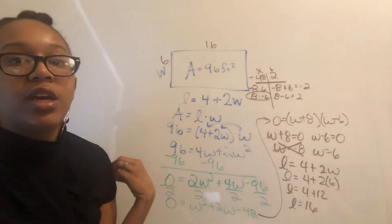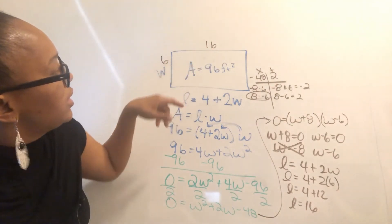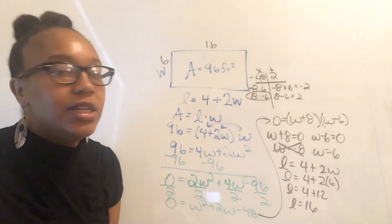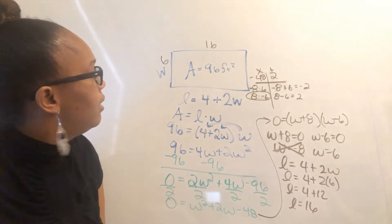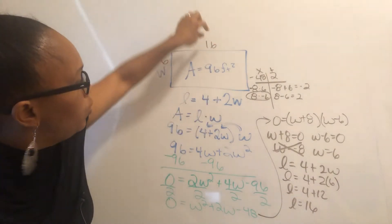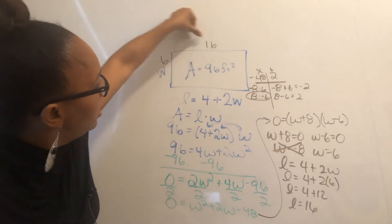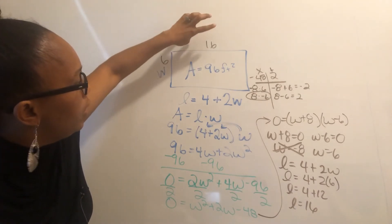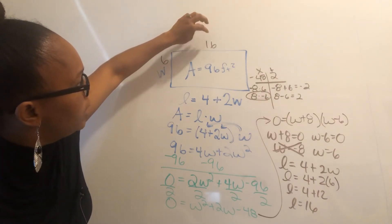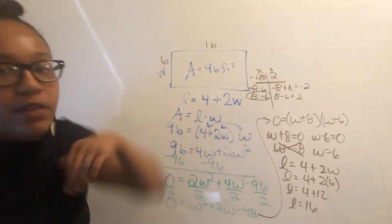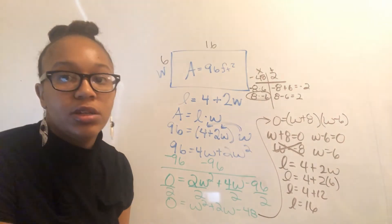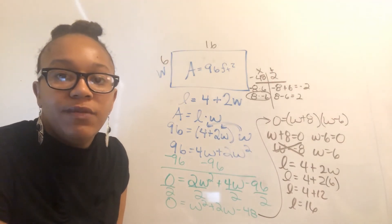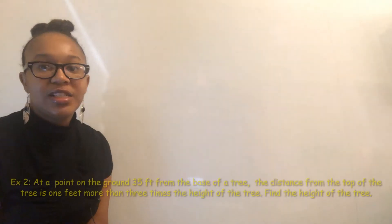You can check it: 16 times 6 equals 96, which matches the area. And twice the width is 12, add 4 to get 16, which is the length. So this is how you work an application of the quadratic equation.